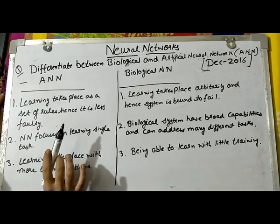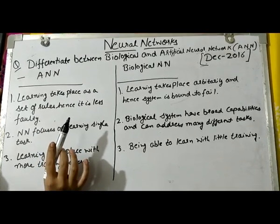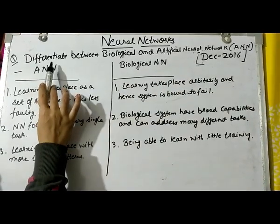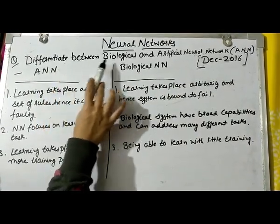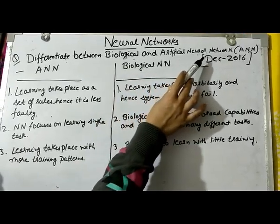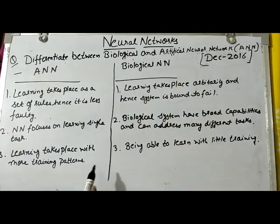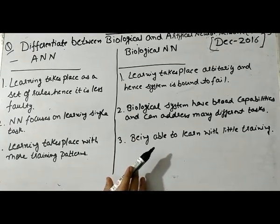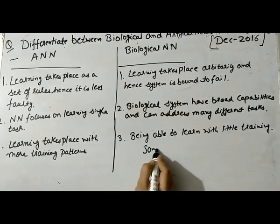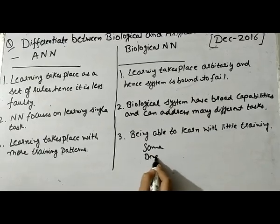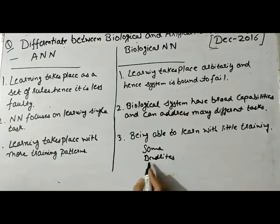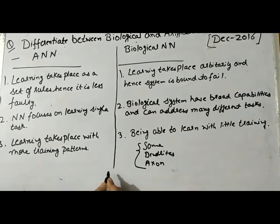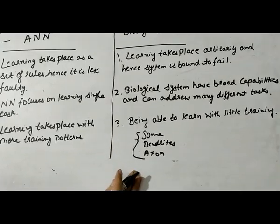Students, the next question comes from December 2016. It asks: what is the difference between biological neural network structure and artificial neural network structure? As I explained in my previous video, the biological neural network structure contains three main parts: soma, dendrites, and axon. These three parts are the essential components of any biological neural network.